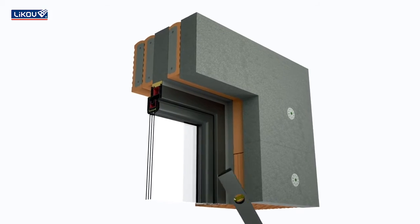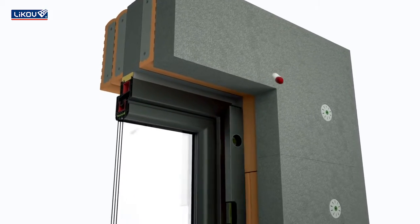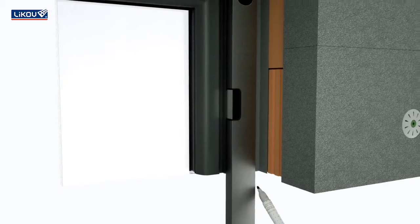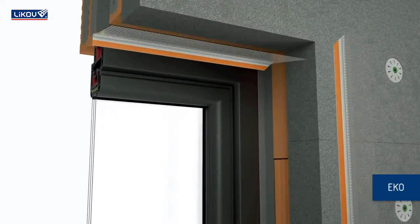Before installing window reveal beads, it is necessary to mark the position of the bead according to the insulation material's thickness in the reveal and ensure it is parallel with the window frame.